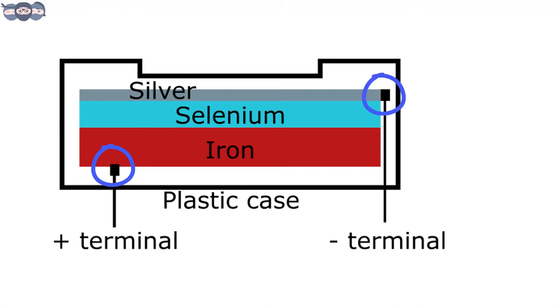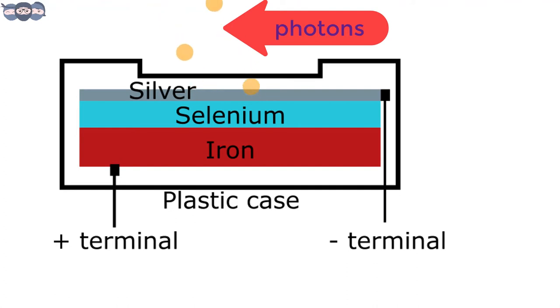Now we will understand how current is produced when light falls on the detector. As we already know, radiations are packets of energy called photons. When these photons fall on the barrier cell, the electrons at the silver-selenium are excited and their energy increases.